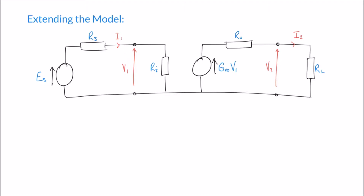Generally speaking, for any amplifier, the input resistance wants to be as large as possible. This is because we want to draw as little current as possible on the input of the amplifier — the whole point is to provide gain and turn a very small signal into a very large one. So we want to draw as little current as possible on the input, meaning the input resistance tends to be very high, ideally infinite. It's the opposite for the output resistance, where we want maximum current flow from the amplifier to provide maximum gain, so the output resistance tends to be as small as possible, ideally zero.